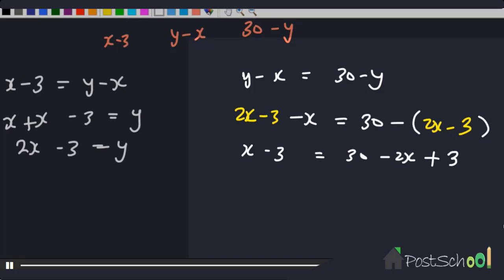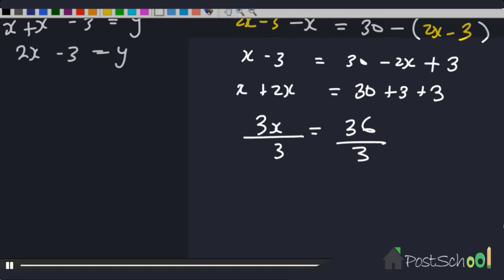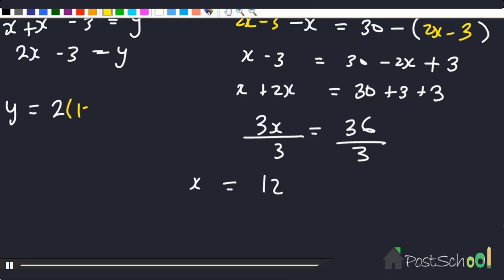Simplifying: x − 3 = 30 − 2x + 3, so x + 2x = 30 + 3 + 3, giving 3x = 36, therefore x = 12. Substituting back: y = 2(12) − 3 = 24 − 3 = 21. So x = 12 and y = 21.